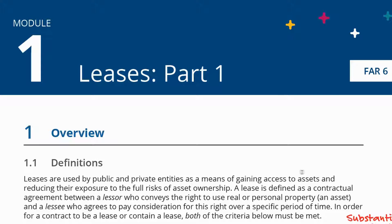The question is how to identify whether a contract contains a lease or not. Are we talking of a lease or are there other forms that might look like a lease agreement but actually are not? And what about the main accounting treatments in the books of each of the lessor and the lessee? This is what we're going to go through.